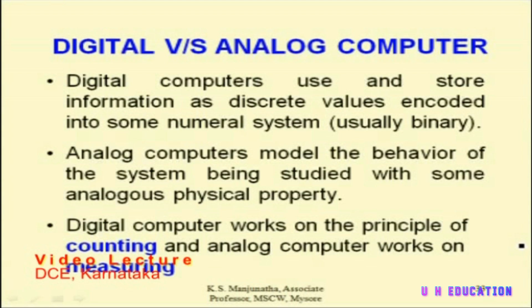The classification of microcomputer, mini computer, mainframe computer, and supercomputer is based on speed, cost, and memory capacity. But based on the working principle, computers can be classified as either a digital computer or an analog computer. A digital computer can understand specific digits, for example 0 and 1. Analog computers model the behavior of a system with some physical property — for example, a thermometer or barometer are examples of analog computers. A digital computer works on the principle of counting, whereas an analog computer works on the principle of measuring.